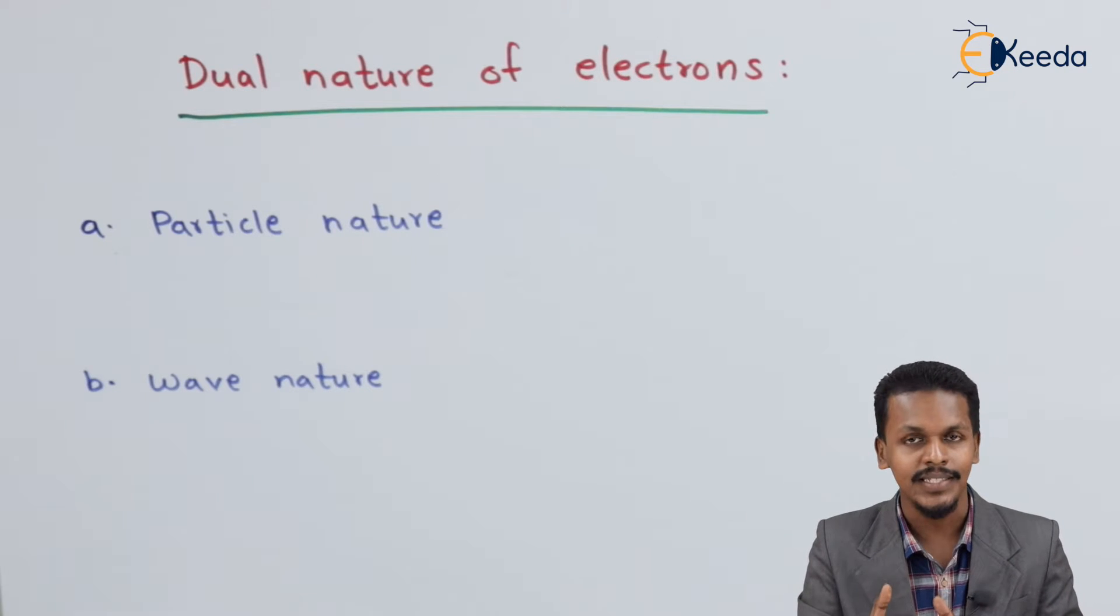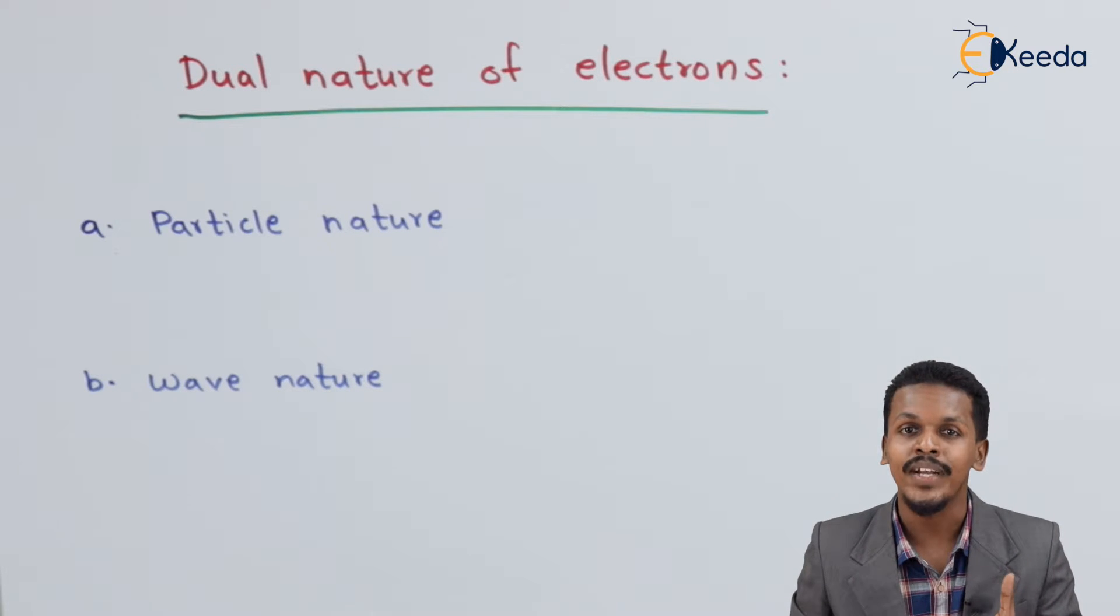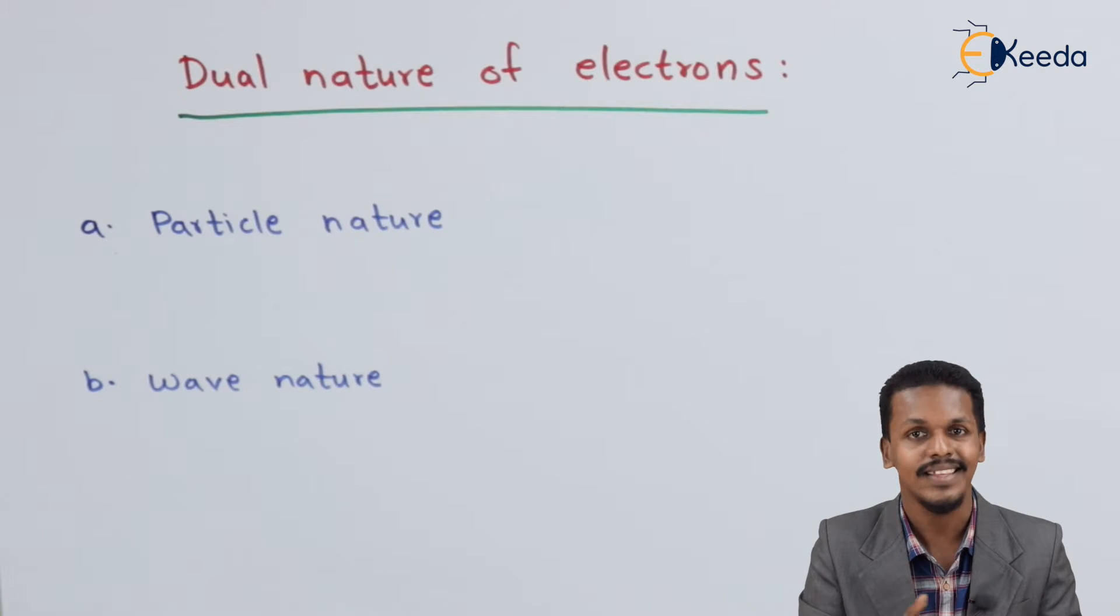That is, electron has a particular mass of 9.1 into 10 raised to minus 31 kg, which itself indicates that electron is acting like a particle. It behaves like a particle.